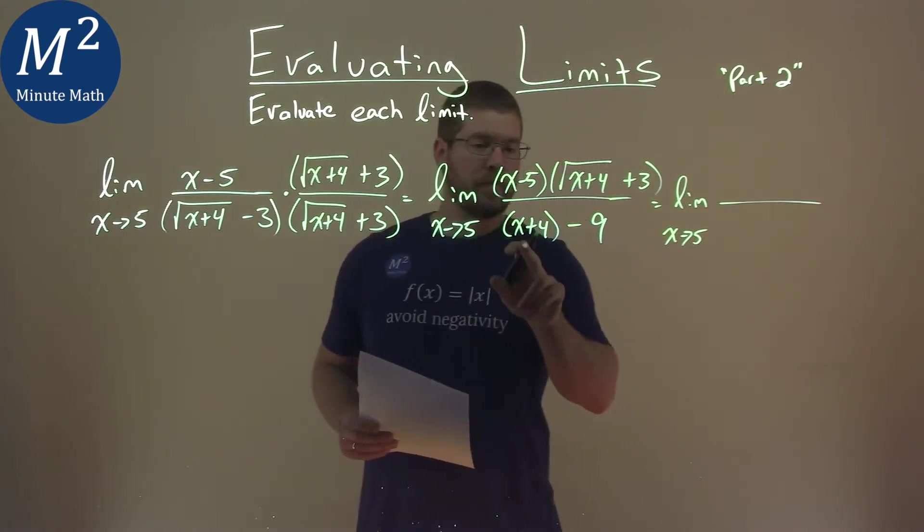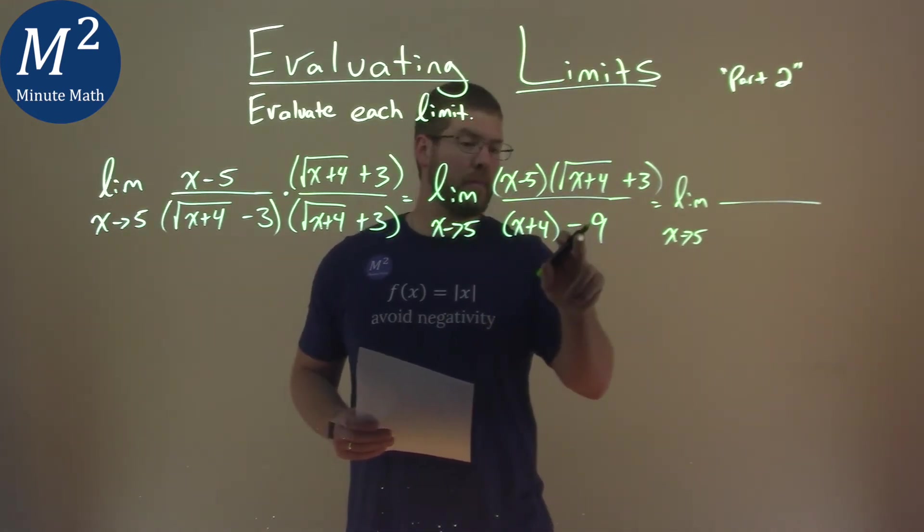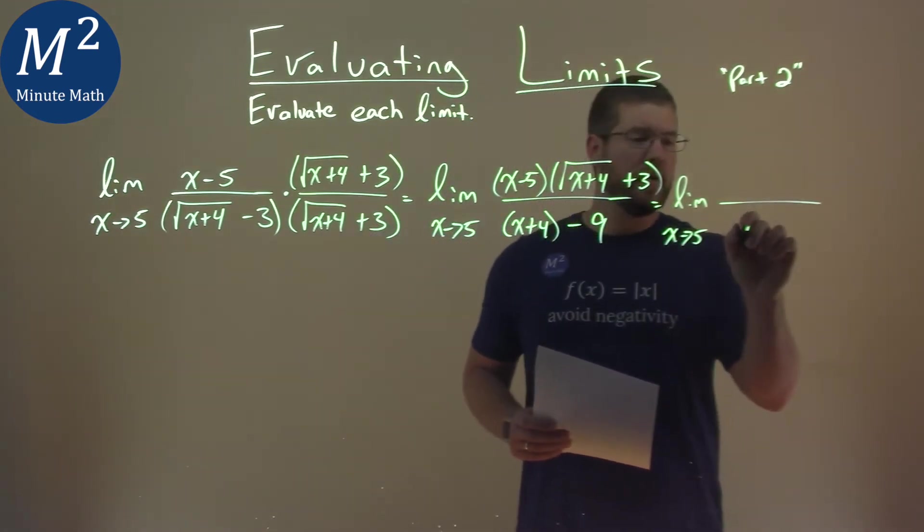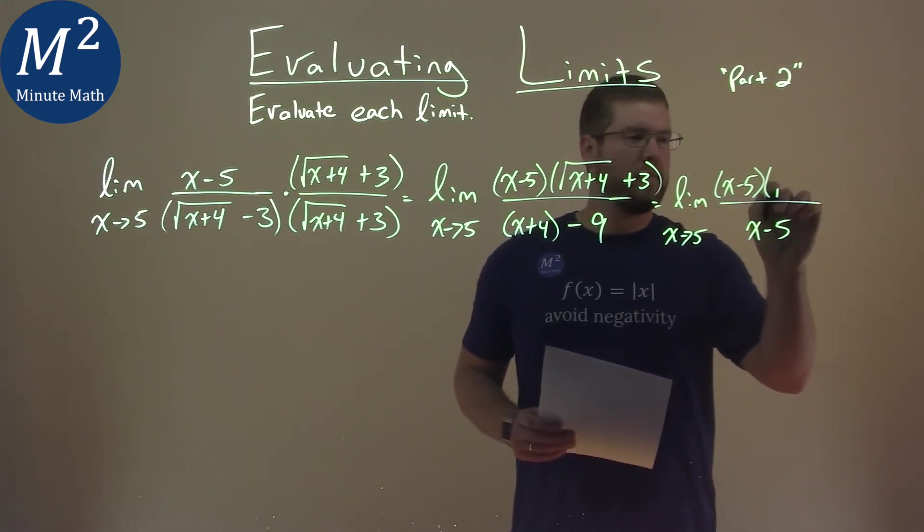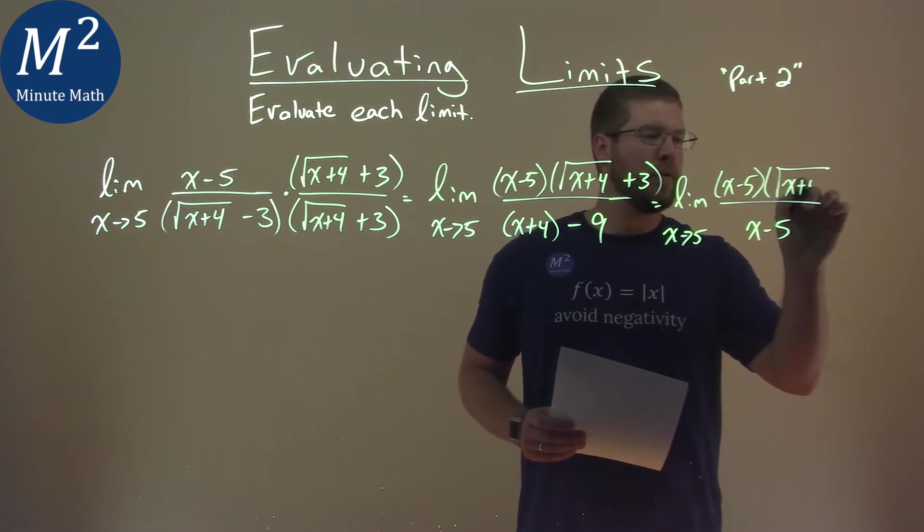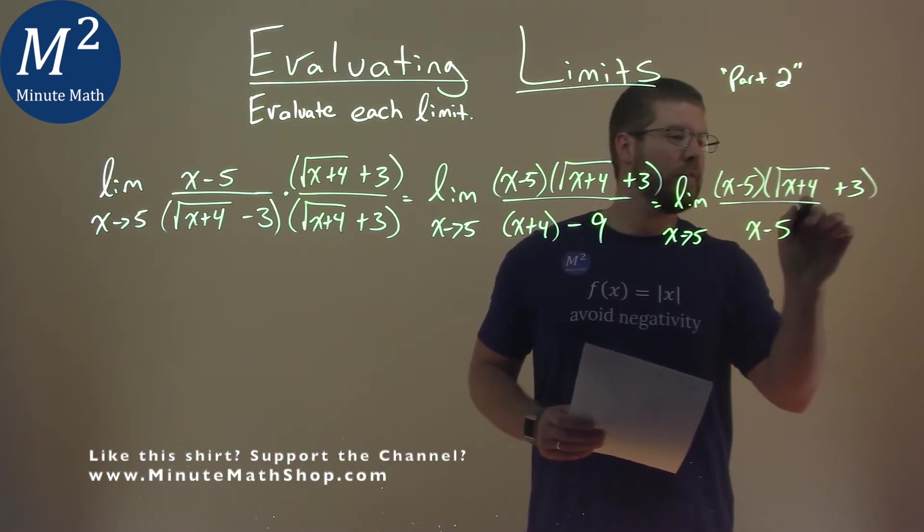of our denominator simplifies. 4 minus 9 is negative 5, so we have x minus 5 in the denominator. The numerator is still that x minus 5 times the square root of x plus 4, and we have the plus 3. I always forget to make it long enough.